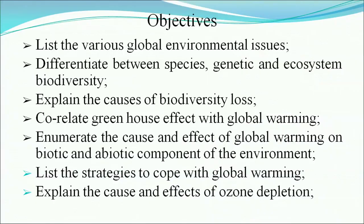After completing this lesson, you will be able to understand the following objectives: list the various global environmental issues; differentiate between species, genetic, and ecosystem diversities; explain the causes of biodiversity loss; correlate the greenhouse effect with global warming; enumerate the causes and effects of global warming on biotic and abiotic components; and list the strategies to cope with global warming.